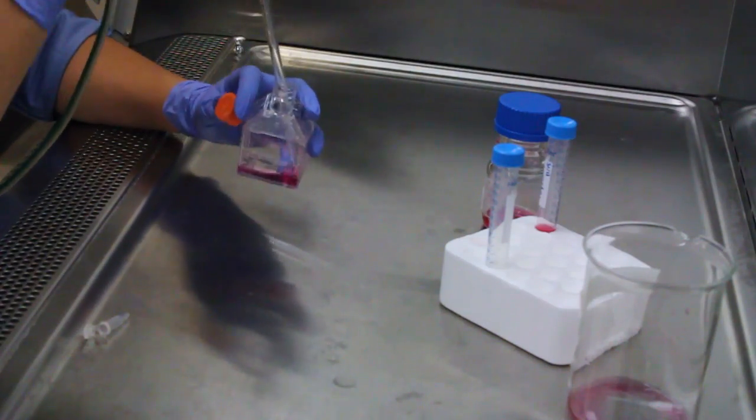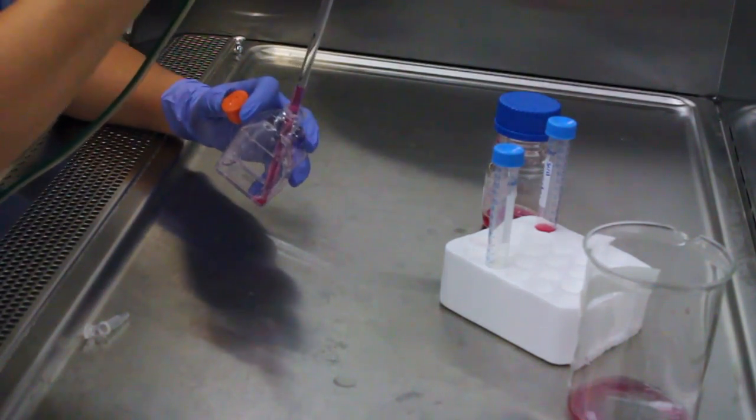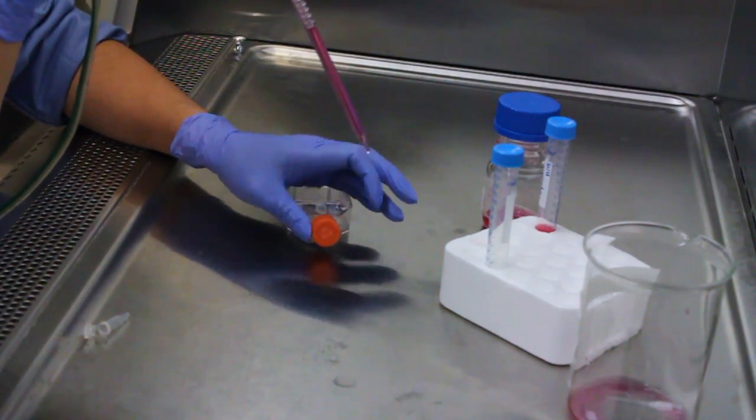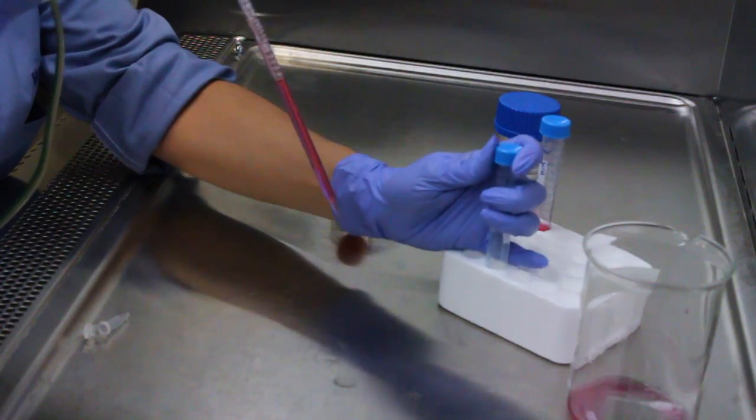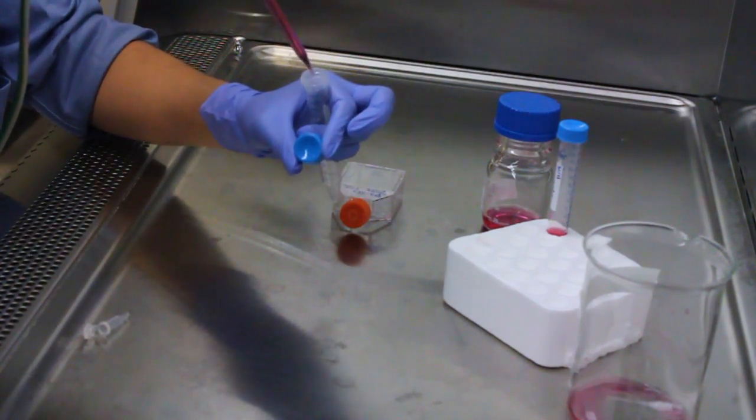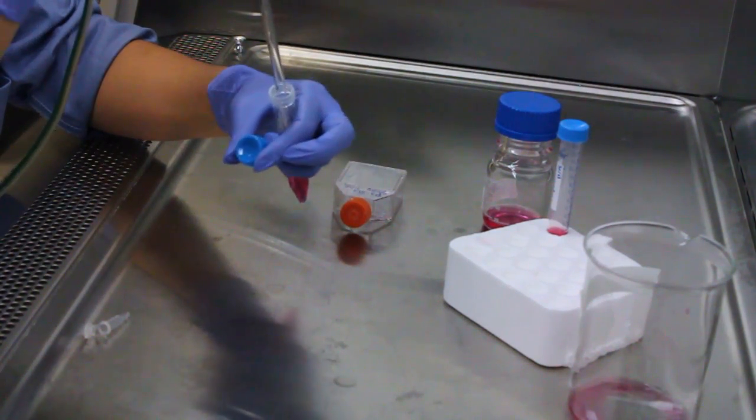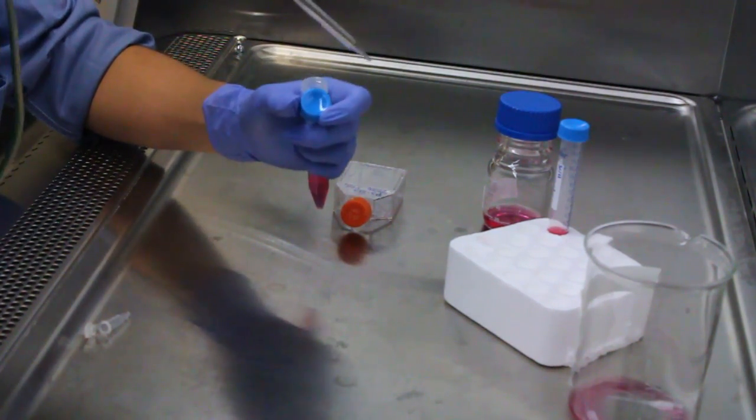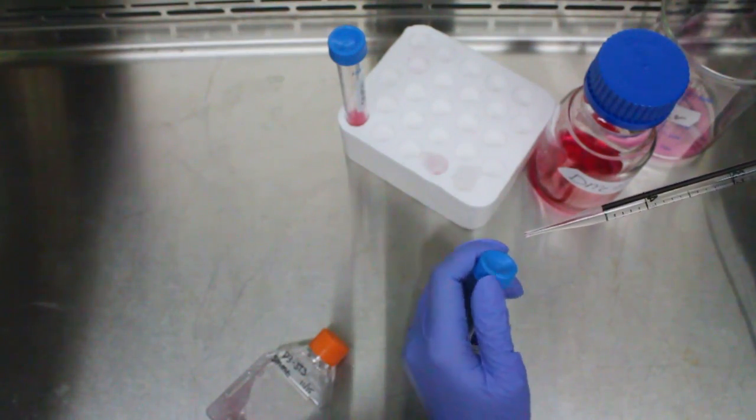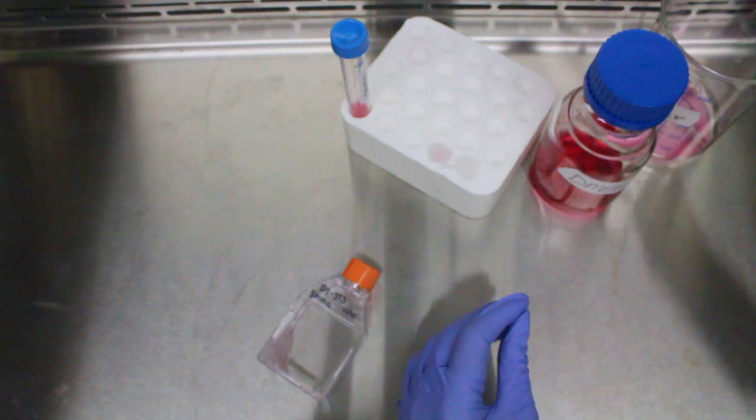We will now begin the procedure of splitting the cells, which begins with centrifugation. Removing all the media from our flask, we transfer into a sterile 15 milliliter centrifuge tube. Take your sample to the centrifuge and spin for five minutes at 4,000 rpm.